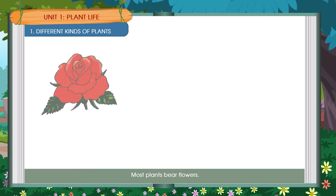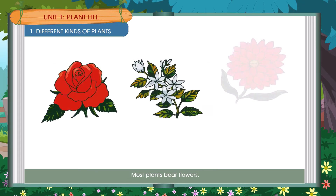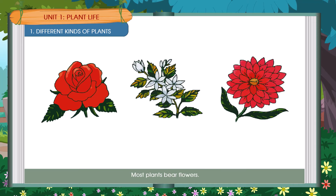Most plants bear flowers. Flowers are the most beautiful part of the plant. A Rose, Jasmine Flowers, Dahlia.